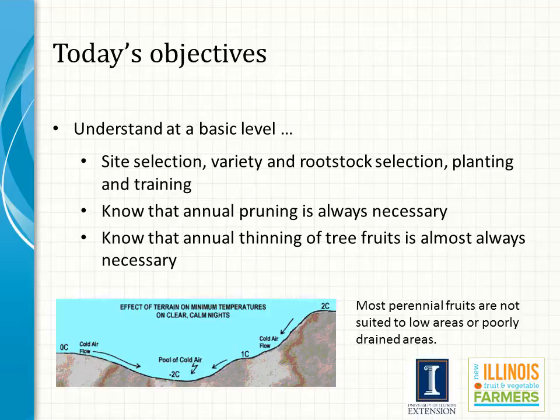This module is designed to cover the basics of fruit production, including the components for good site selection, the selection of cultivar and rootstocks, the steps in the planting process, the importance of training and pruning, and finally, crop load management, which is also simply referred to as thinning.